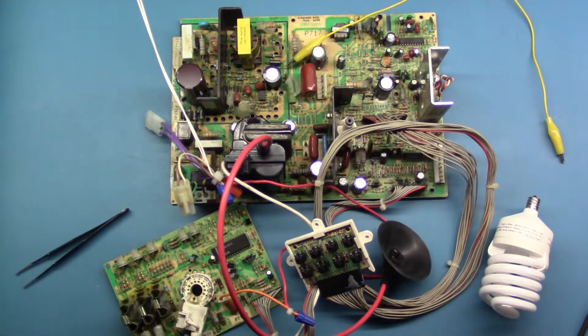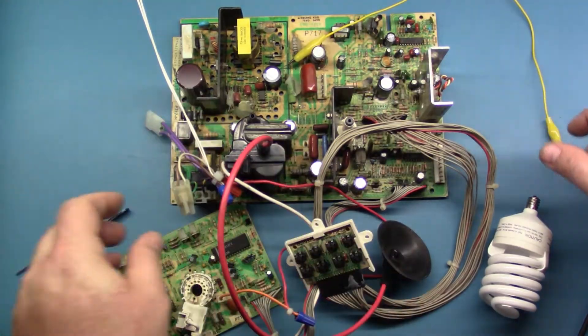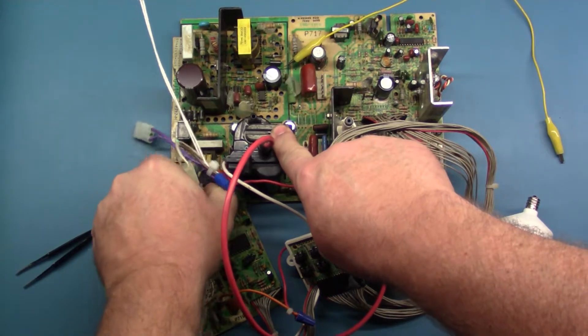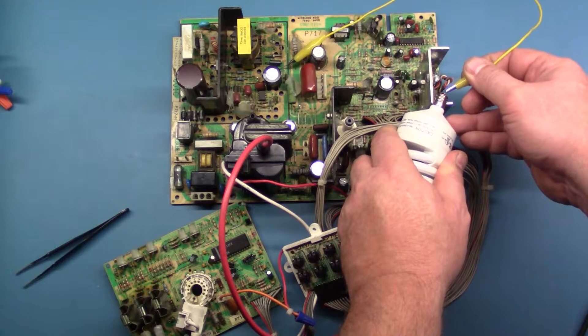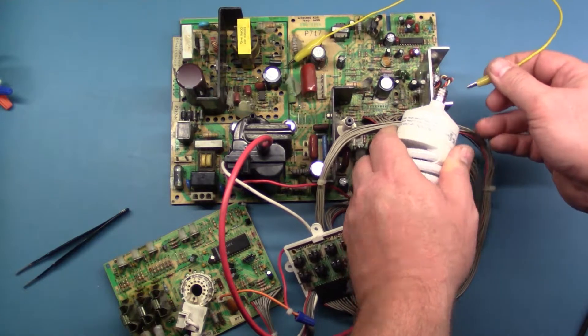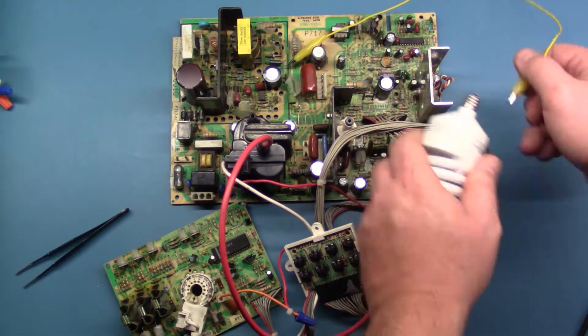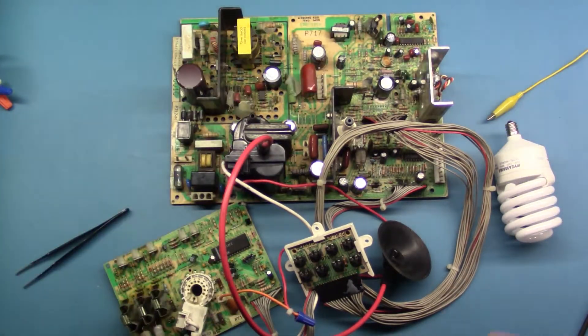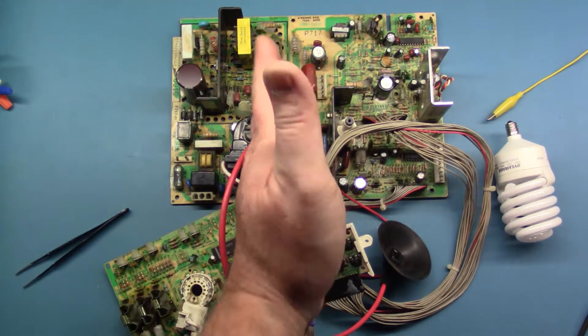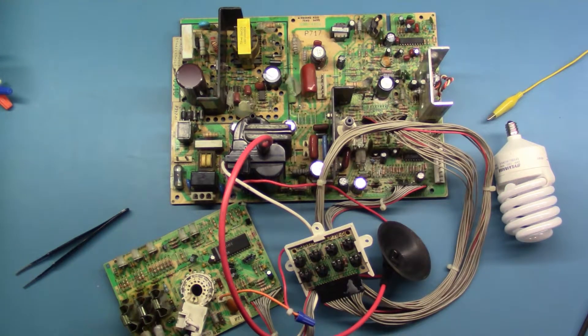Now that we have power removed, we can dissipate any stored energy by doing this. There you go, see it lit up a bit, so now we've dissipated a bit and we don't have to worry about shocking ourselves. Then we can take this and put that back in the circuit, solder it back in and go about our troubleshooting.